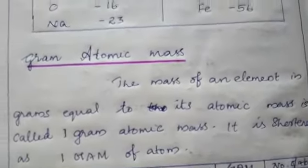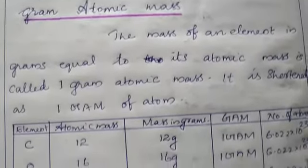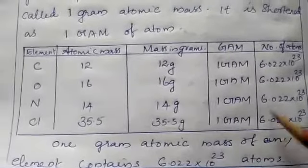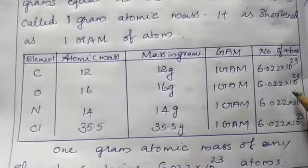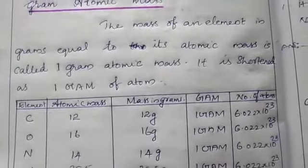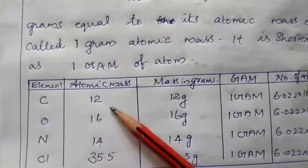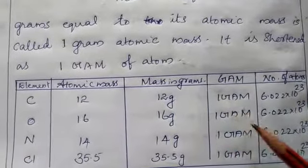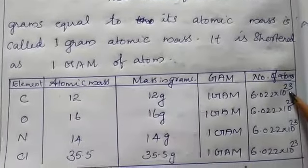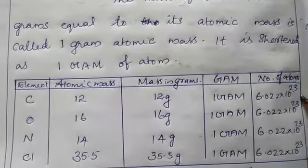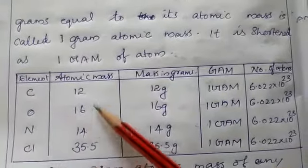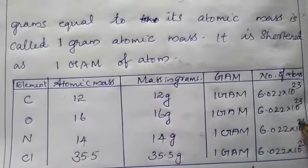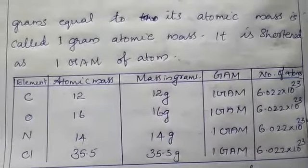1 GAM means 1 gram atomic mass. Now let's look at the table showing atomic mass, mass in grams, and GAM for some elements. For carbon: atomic mass 12, mass in grams 12 g, that is 1 GAM, and the number of atoms is 6.022 × 10²³. For oxygen: atomic mass 16, mass 16 g, equals 1 GAM, also 6.022 × 10²³ atoms.